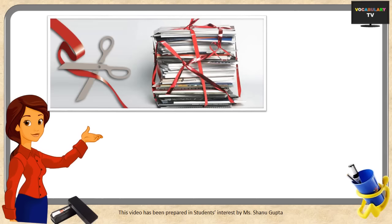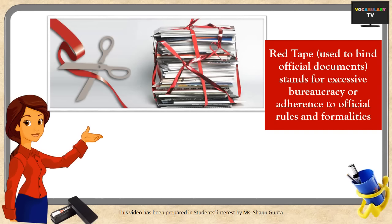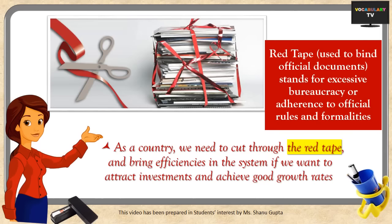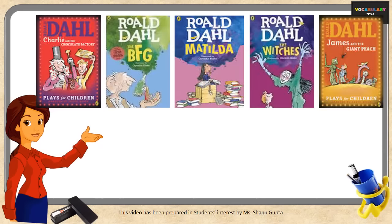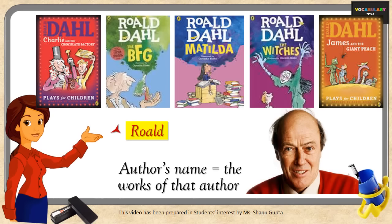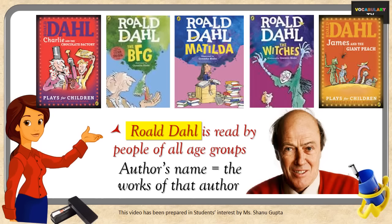Another very good example of metonymy is the expression 'red tape.' The red tape has been used for about two centuries to bind official and legal documents, and the term has come to stand for excessive bureaucracy or adherence to official rules and formalities. It has a negative connotation, as in: 'As a country, we need to cut through the red tape and bring efficiencies to the system.' Finally, an author's name can represent their works — if I say 'Roald Dahl is read by people of all age groups,' the implied meaning is that his books such as Charlie and the Chocolate Factory, The BFG, and Matilda are read by people of all ages.